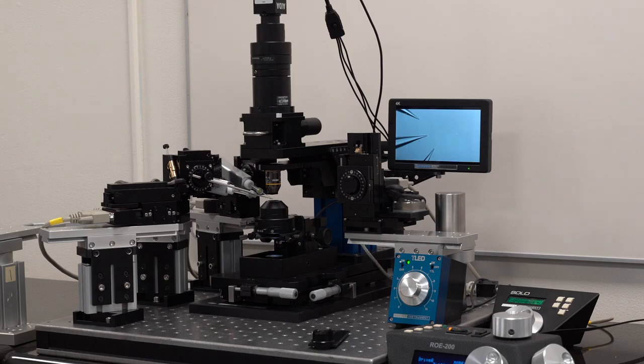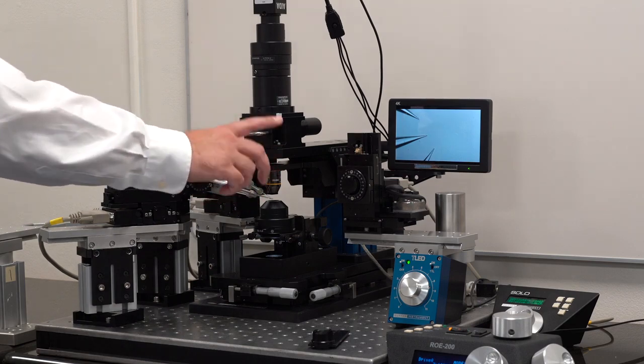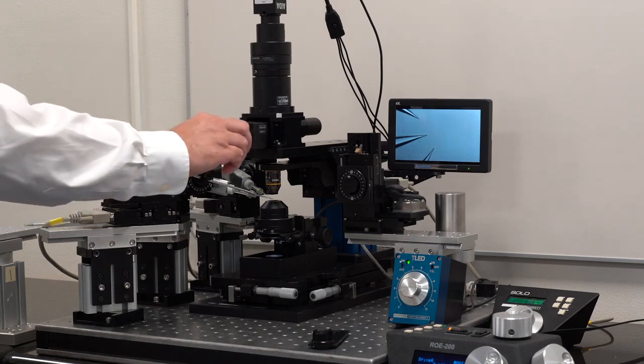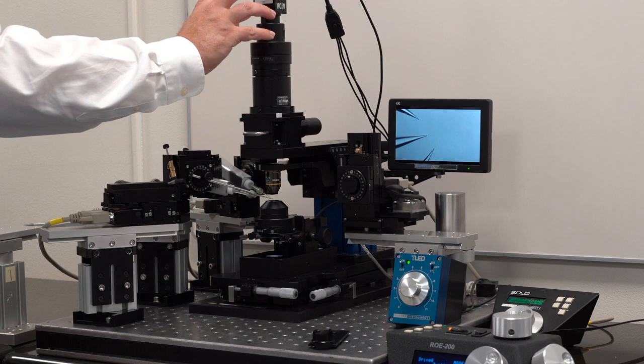This is another version of NAN that we are calling simple NAN. And what I mean by simple is that there is a single objective nose piece. A single filter cube, which you can change with no tools. There is no TRINOC. It is just an Olympus tube lens and C-mount for the camera.